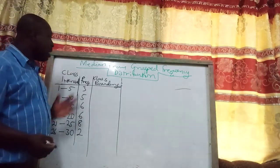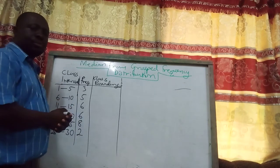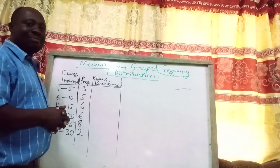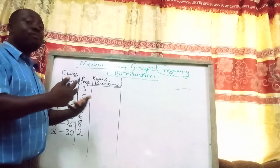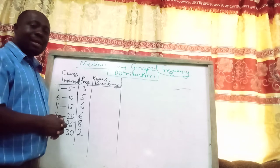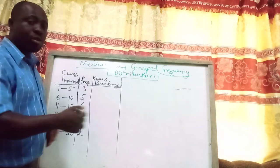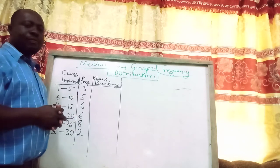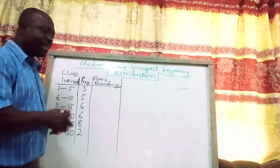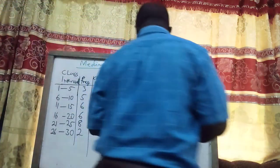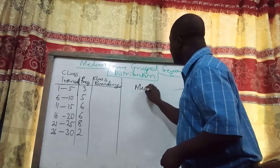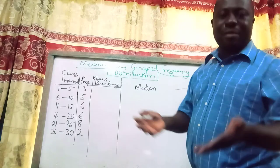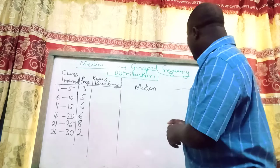Hello once again. We are finding the median from a grouped frequency distribution table. Our main interest is how to calculate the median. The median from a grouped frequency distribution table can be found by calculations, from the histogram, or from the cumulative frequency table. We are now focusing on finding the median by calculation.